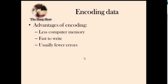Now, encoding data. For example, a code might be FSH for F-sharp. The reason codes like this are used is because they take up less computer memory, they're fast to write, and people usually make fewer errors. Typical exam questions on encoding ask you to say what a code stands for — for example, Y for yes and N for no — and then ask for an advantage or disadvantage of encoding.